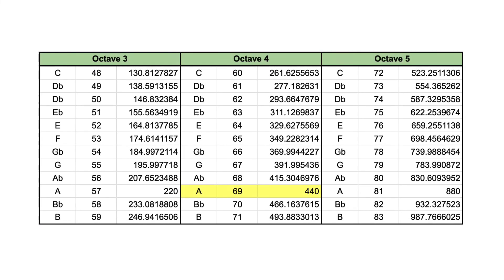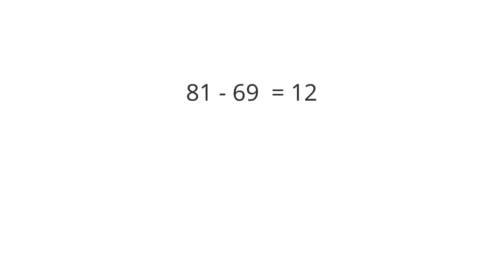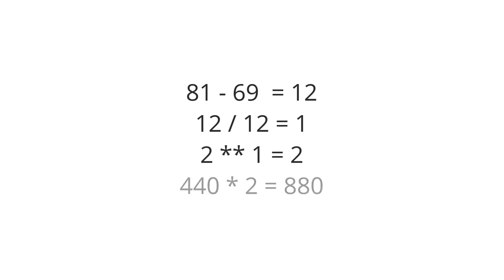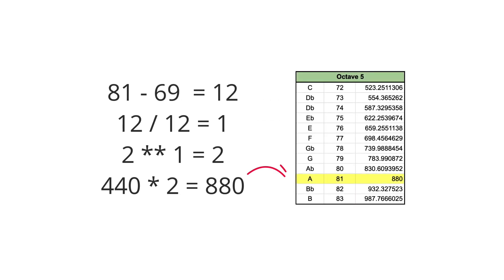We can try with the octave above the 440 Hz A as well, which has MIDI number 81. 81 minus 69 equals 12. 12 divided by 12 is 1. 2 to the power of 1 is 2. And 440 times 2 is 880, which also makes sense. So there you have it — this is how you convert MIDI numbers to frequencies.